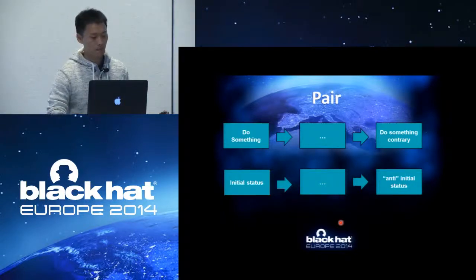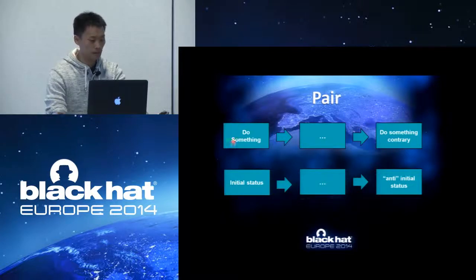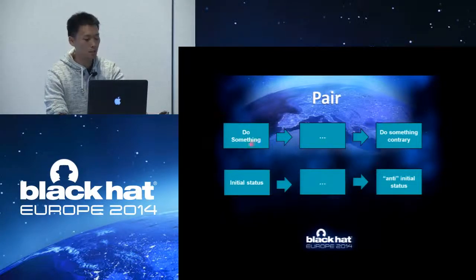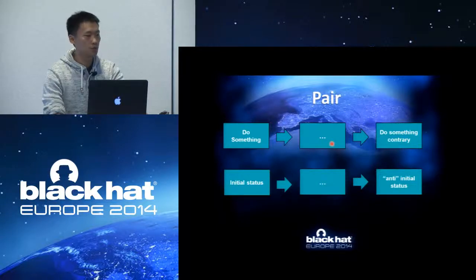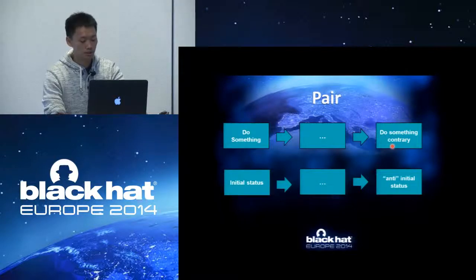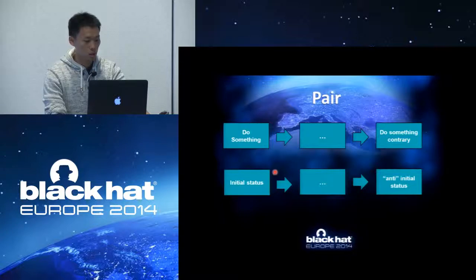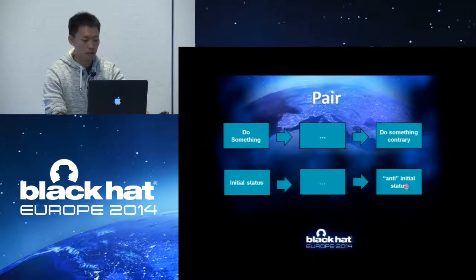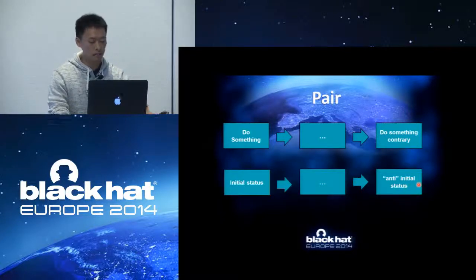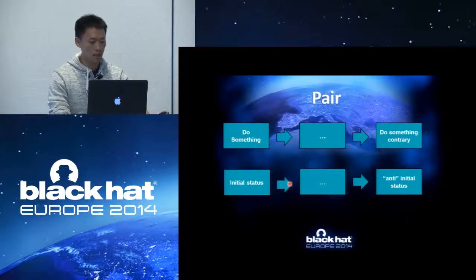Let's describe this idea in a flowchart. In the first stage, we do something. Then in the second stage, we do something else randomly. And in the final stage, we do something contrary to the first stage. Or we can initialize a status to value A, then do something else, and in the final stage assign that status to value B. We call this idea 'pair.'